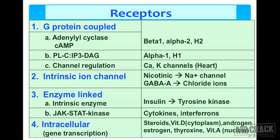The GABA-A receptor has a chloride ion channel. Enzyme-linked receptors can be intrinsic enzymes or Janus kinase (JAK-STAT) type. The insulin receptor is an intrinsic enzyme receptor with tyrosine kinase, and the JAK-STAT kinase is acted upon by cytokines and interferons.